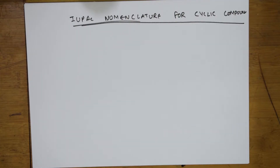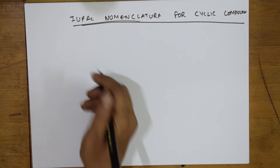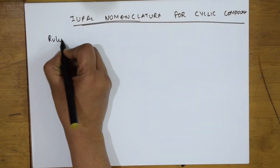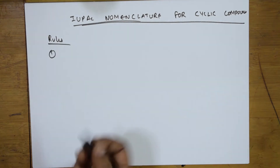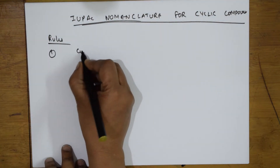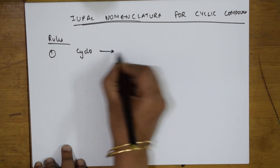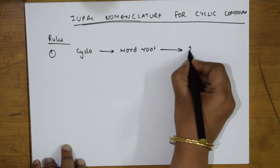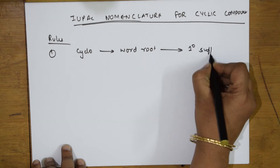After organic compounds, let us start learning the rules for IUPAC nomenclature for cyclic compounds. The first rule to remember for naming cyclic compounds: first comes 'cyclo', then comes the word root, then comes the primary suffix. This is how you are going to name it.